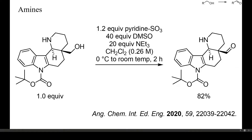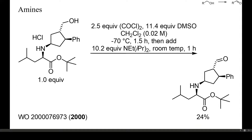Primary or secondary amines can in principle also react with activated DMSO. Nevertheless, successful DMSO-mediated alcohol oxidations in the presence of unprotected amines have been reported. In this example, DMSO was activated with a slight excess of sulfur trioxide, and the oxidation was conducted at 0 degrees Celsius. In another case, however, a Swern oxidation of an unprotected amino alcohol did not proceed smoothly, and only a low yield of the amino aldehyde was obtained.